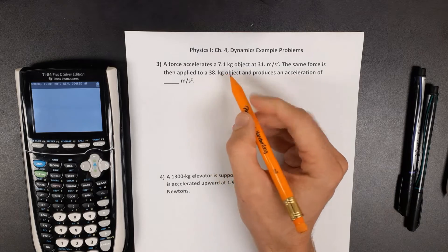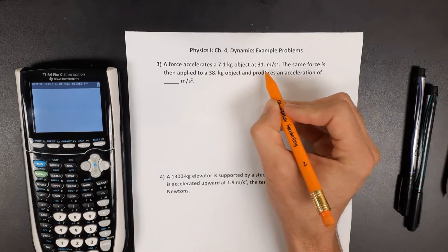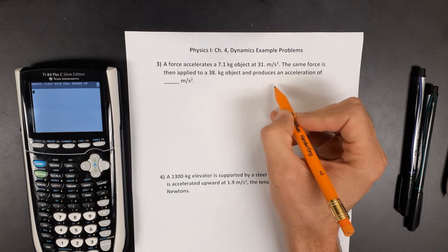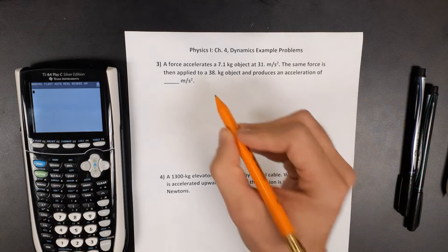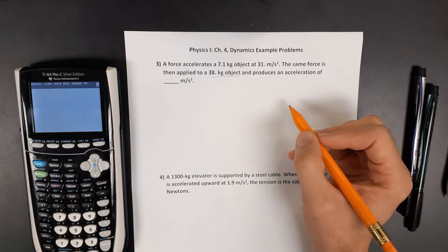In this problem, a force is being applied to a 7.1 kilogram object with an acceleration of 31 meters per second squared. That same force is then applied to a different object, and we want to know what is that new acceleration.